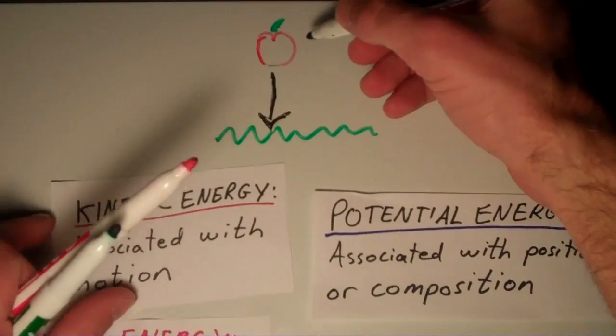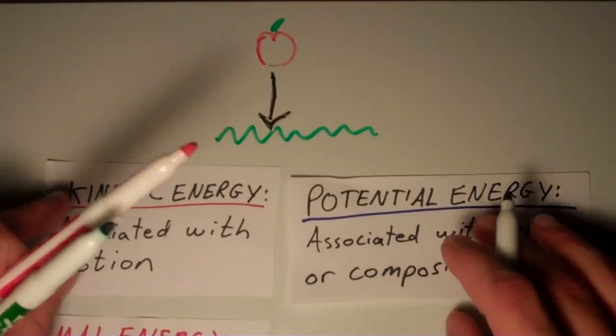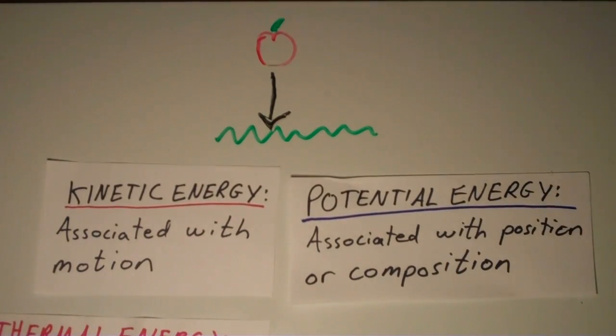So, the apple has potential energy. When it's released, it gets converted into kinetic energy, and it transfers thermal energy to the ground, which raises the temperature of the ground just a little bit.